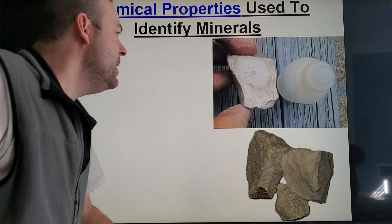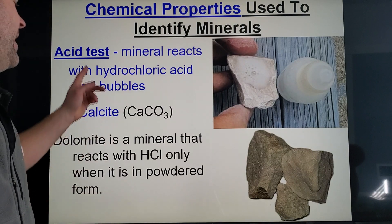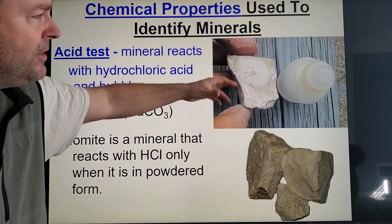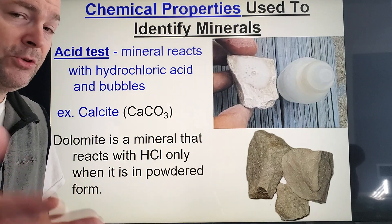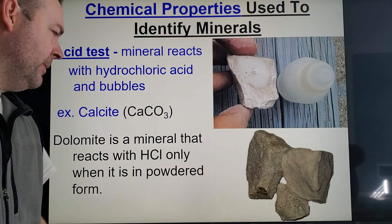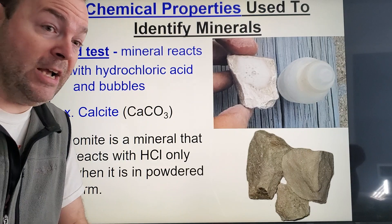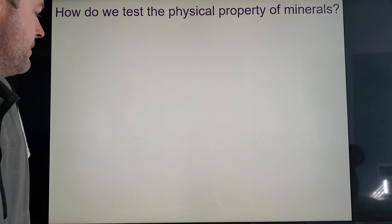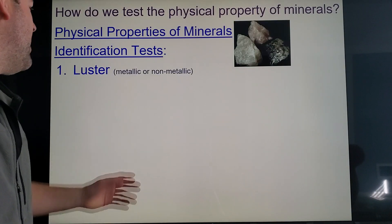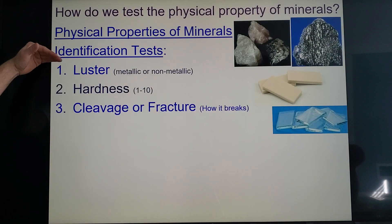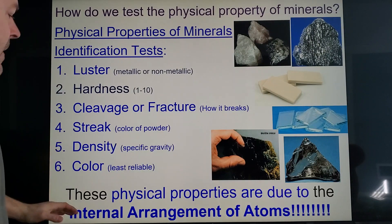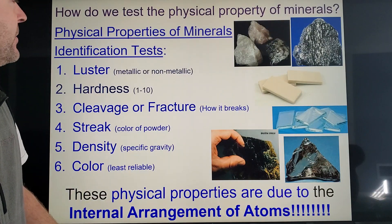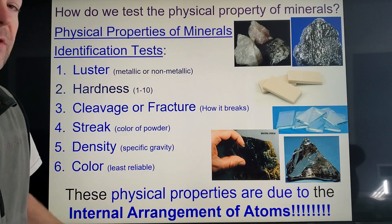All of these physical properties are due to the internal arrangement of atoms. There are also chemical properties — some minerals react to acids. Calcite, which makes up limestone, will bubble and fizz if you put hydrochloric acid on it. Dolomite will react too, but a little slower, so the rate of reaction can also help identify it. To summarize: luster, hardness, cleavage, streak, density, and color are all key properties used to identify minerals.